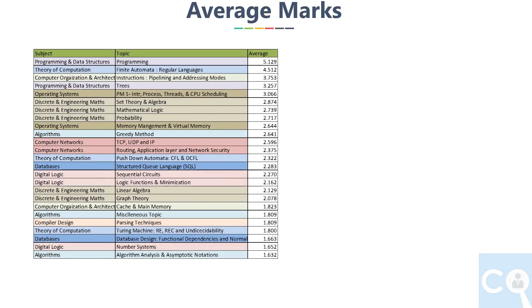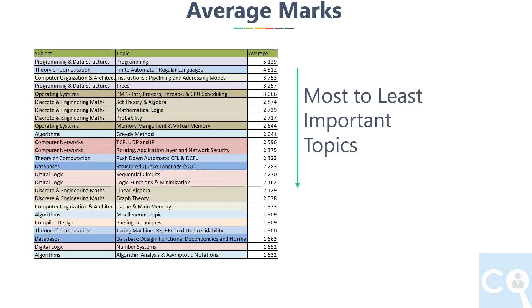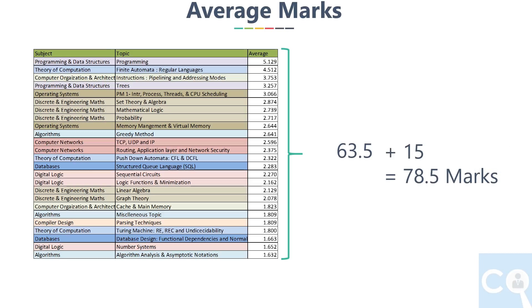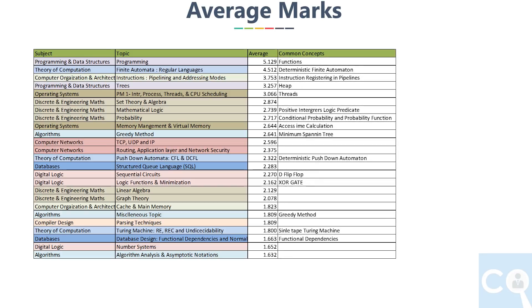Arrange this new average from highest to lowest, which gives us the most to least important topics. If you add the top 25 topics out of these 50, you get 63.5 marks. Adding 15 marks for aptitude brings the total to 78.5 marks. I have also gathered common concepts asked by IIT Madras from these topics.